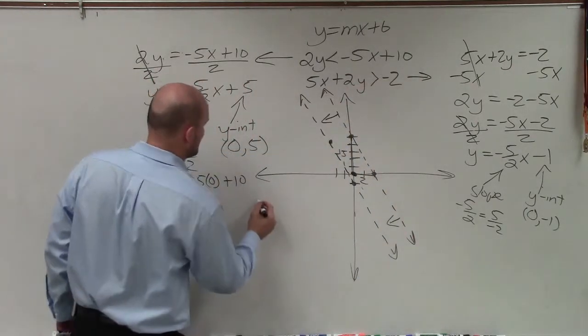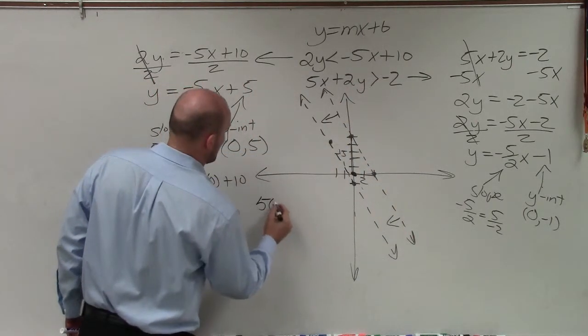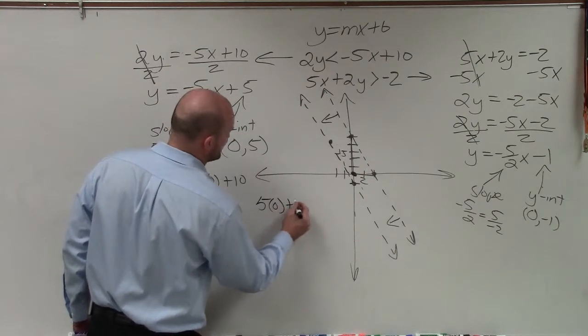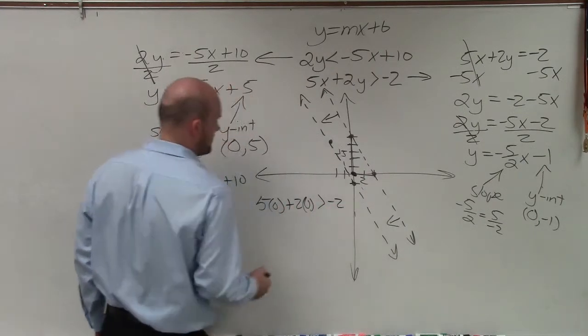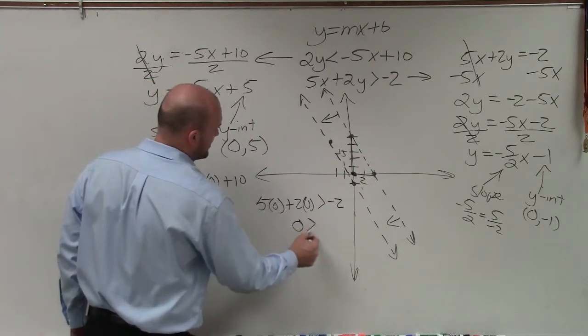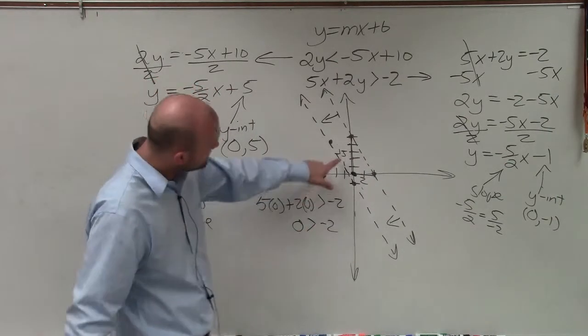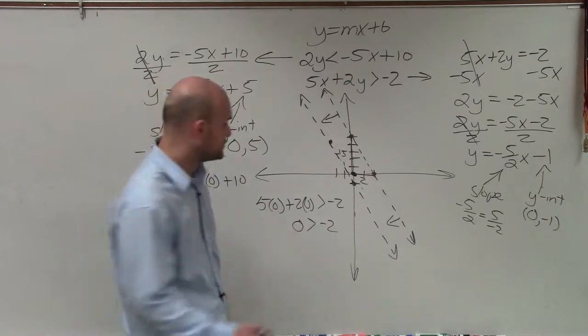Now I'm going to take this inequality, which is 5x, or plug in 0, plug the 0's in for x and the y, OK? And then here I have 0 is greater than negative 2. So now for this inequality, 0 is greater than 2, which is true.